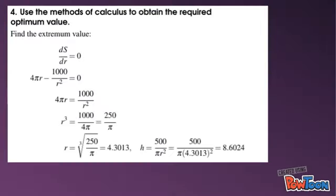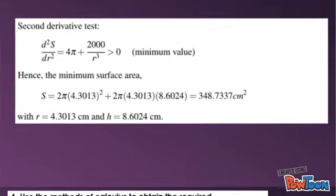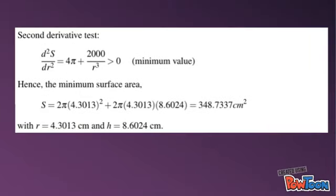When we set dS/dr equals 0, we obtain r equals 4.3013 centimeters. By using the second derivative test, the minimum surface area is 348.7337 square centimeters with r equals 4.3013 cm and h equals 8.6024 cm.